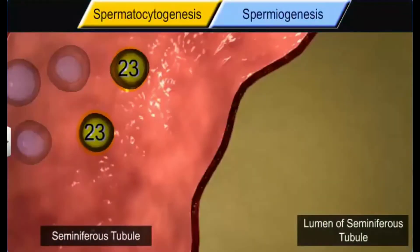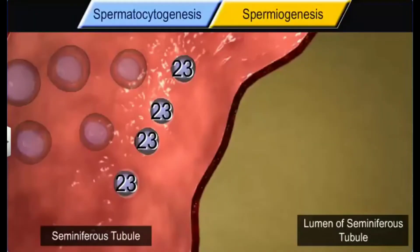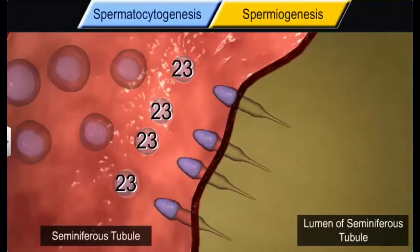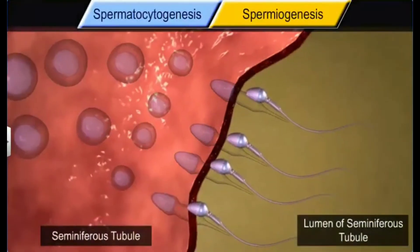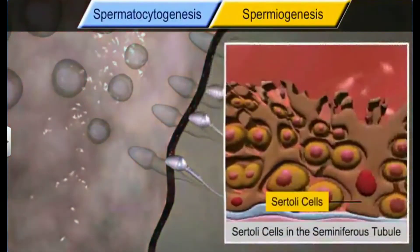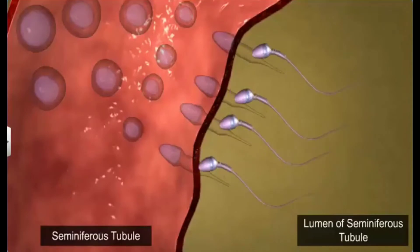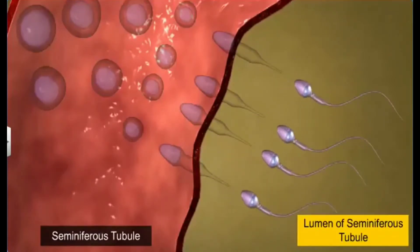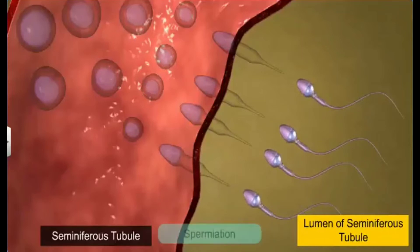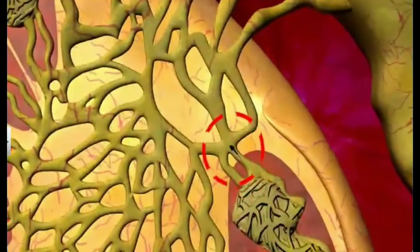Spermatocytogenesis is succeeded by spermiogenesis, during which spermatids differentiate into an elongated, tadpole-like spermatozoa or sperm. During this process, the heads of the sperms remain embedded in the Sertoli cells, which provide nutrition to the developing sperms. The non-motile sperms are then released into the lumen of the seminiferous tubule by a process called spermiation.